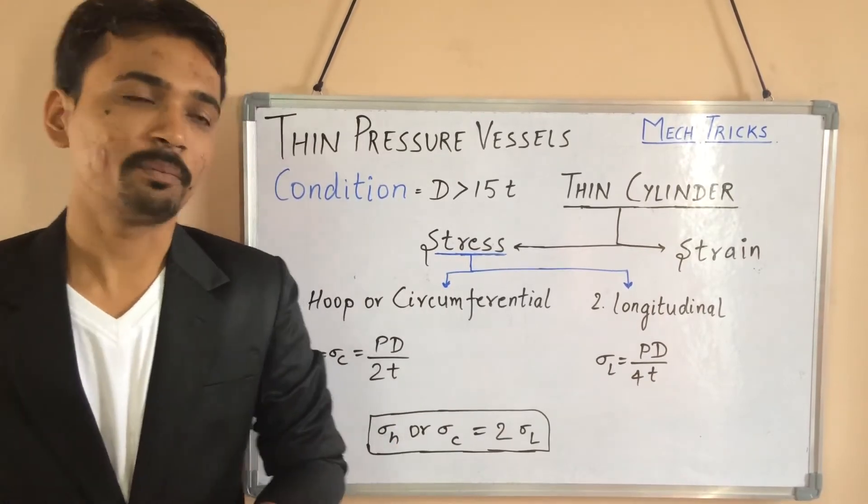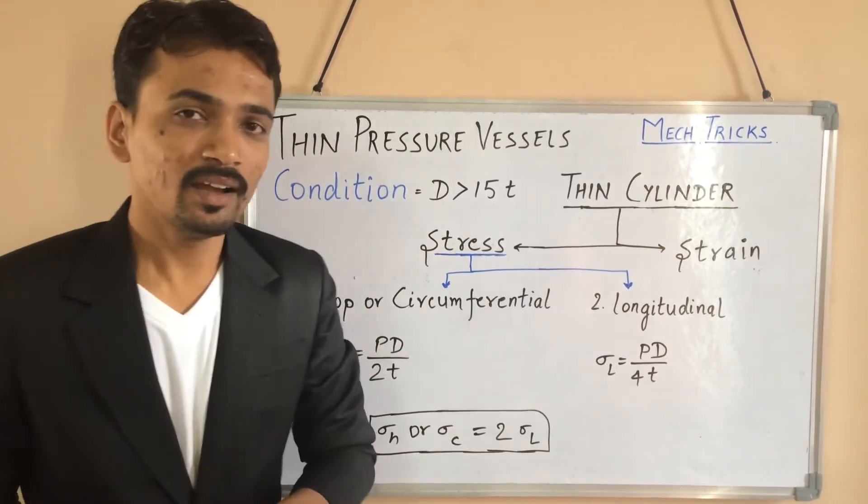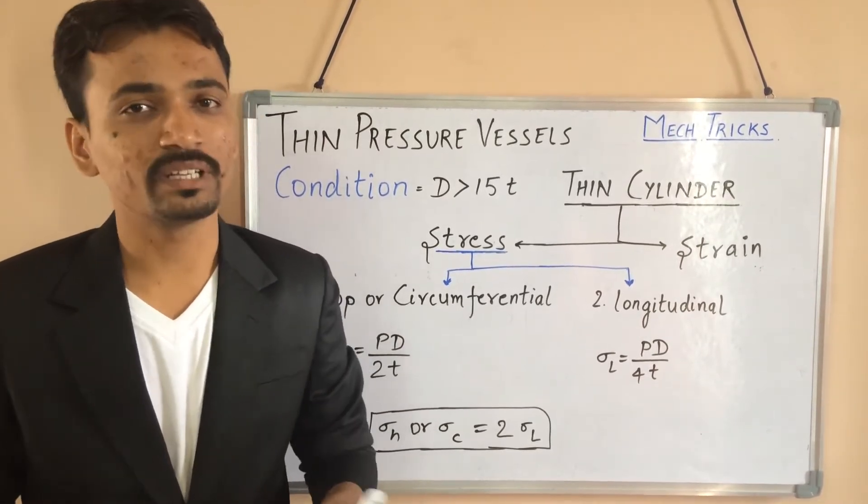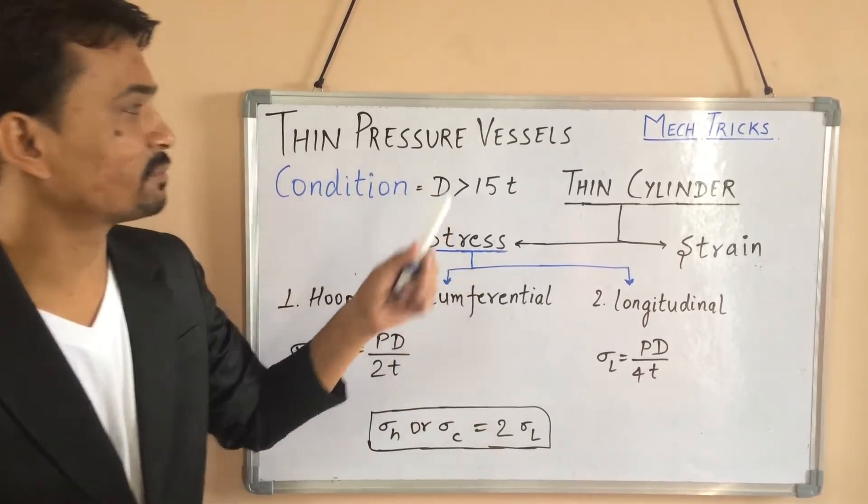Okay dear, let's come to our topic, Thin Pressure Vessels. Whenever the diameter is 15 times the thickness of the material, then it will be called Thin Pressure Vessels.